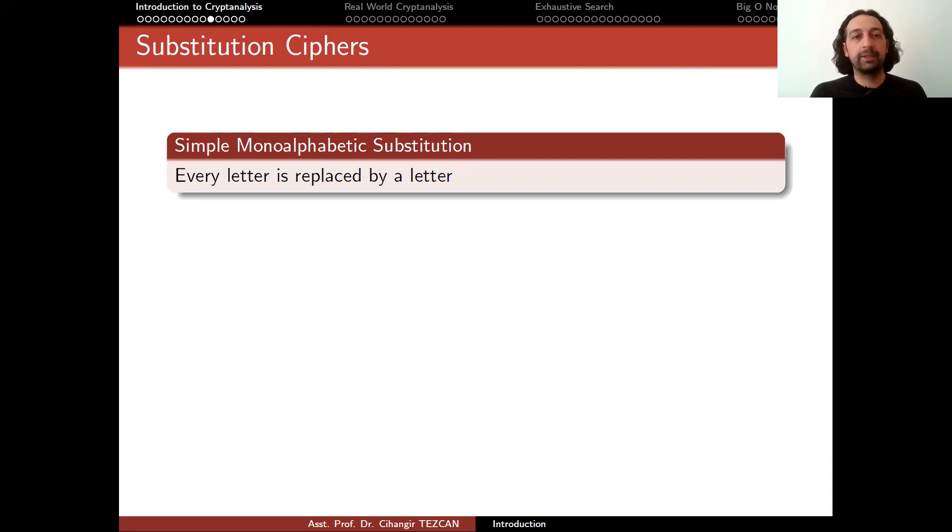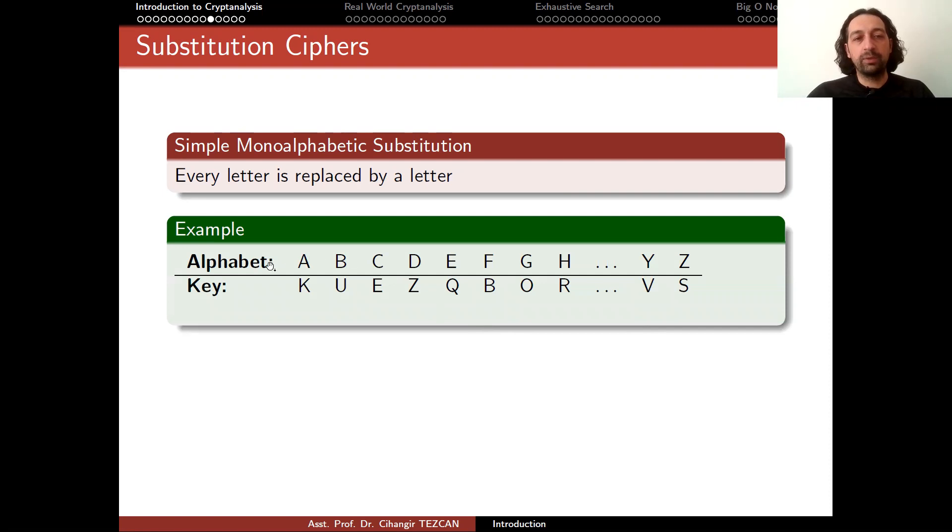And the cipher that we call in this case is simple monoalphabetic substitution. So encryption algorithm is simple. You replace every letter by a letter. So the idea is as follows.